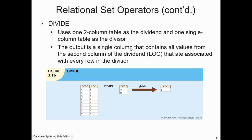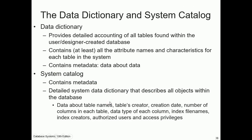The DIVIDE operator uses a two-column table as a dividend and a single-column table as a divisor. The output is a single column containing all values from the second column of the dividend that are associated with every row in the divisor. An example shows that dividing one table by another results in only one cell.